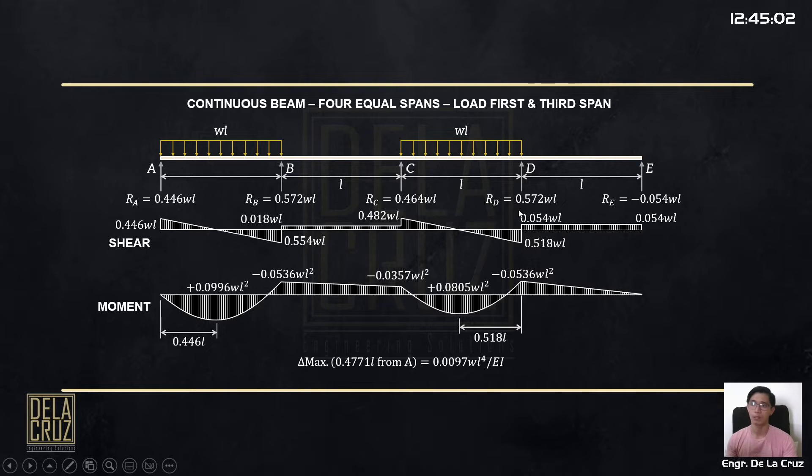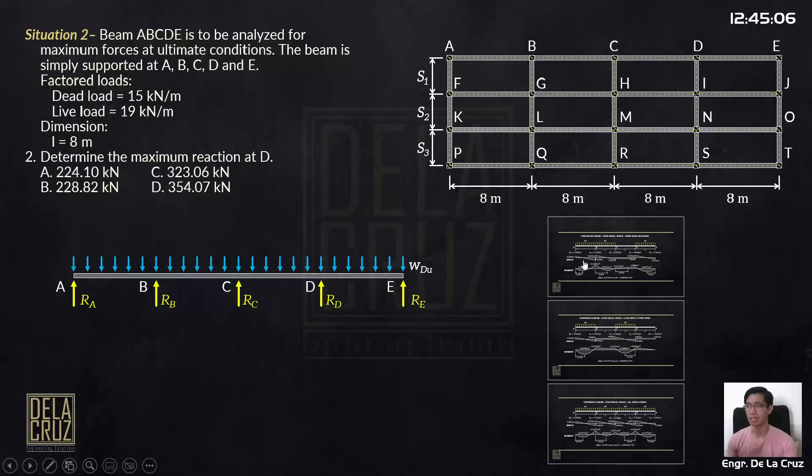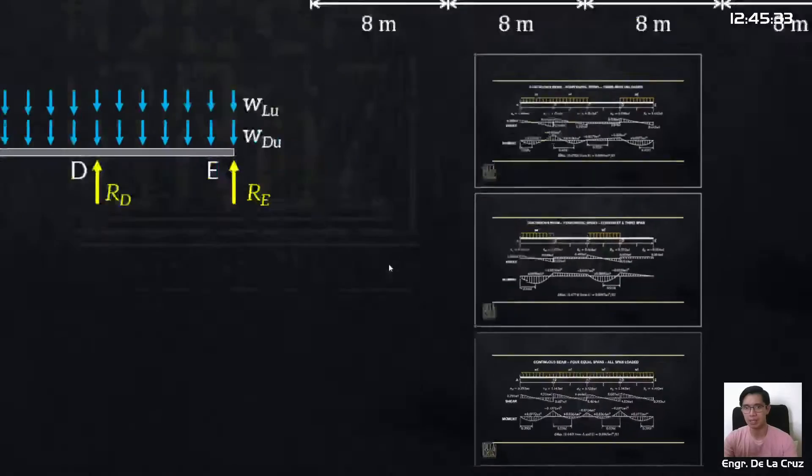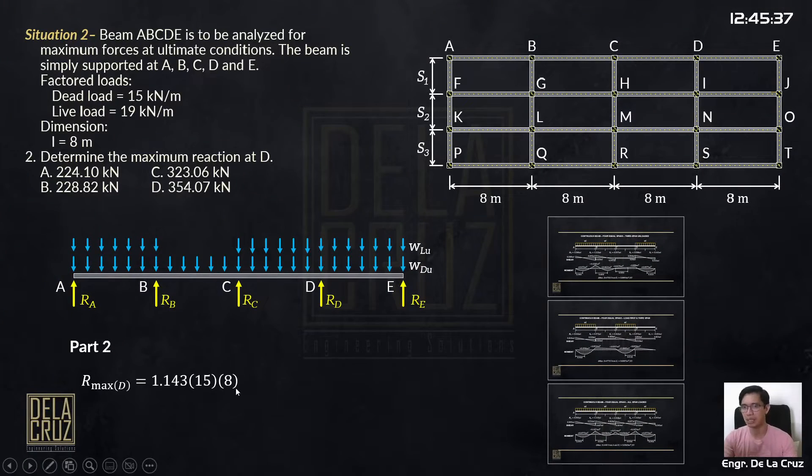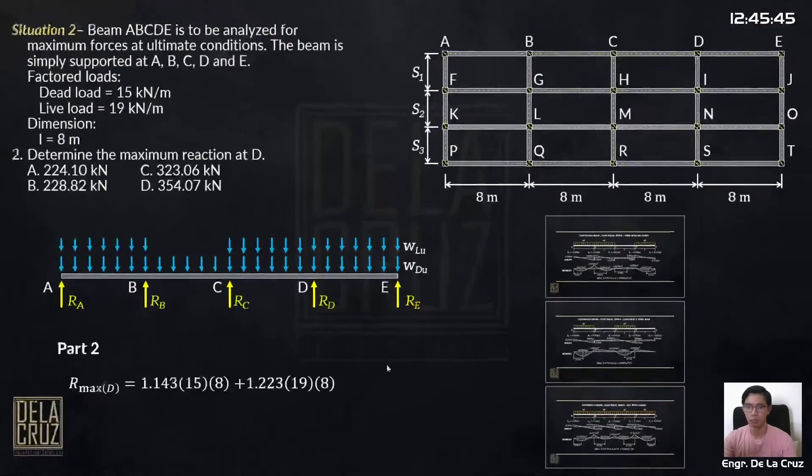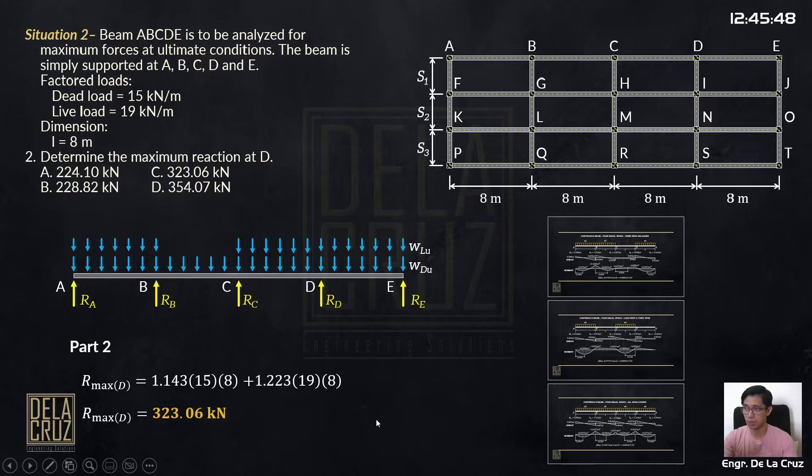Paikutin natin. So this is 1.223. Obviously, mas malaki yan. Tingnan natin dito. Mas malaki yan compared here, 1.143. The same yan. It means gagamitin natin yung part na yun. For the live load, gagamitin natin ito for the maximum reaction at D. You can flip. You can flip the loading. Pwede andito yung ating unloaded span. Iti-check naman natin yung isa pang pattern load. Obviously, napakaliit yan. Yung nag-govern is itong pattern load na yan for the live load. For the dead load, the maximum reaction for D, gagamitin natin ito again. 1.143. The dead load is 15, the span length is 8. Plus the live load, 1.223. We have 323.06 kilonewtons. Letter C. Maximum yung hinahanap. Kaya letter C yung answer.